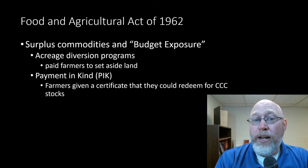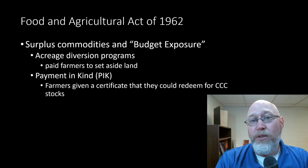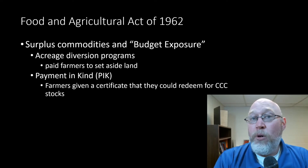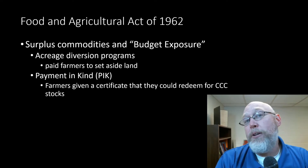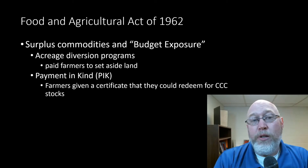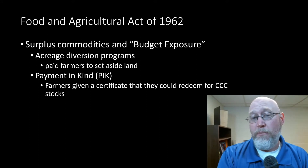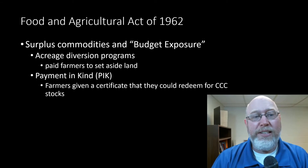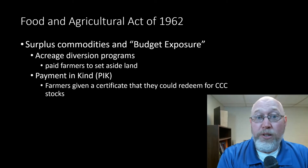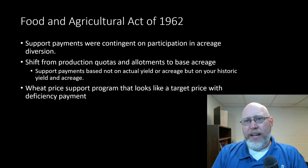The big story in the 60s is surplus commodities — all the extra stuff stockpiled through the CCC program — and budget exposure. What we see in the Food and Agricultural Act of 1962 is more acreage diversion programs: farmers are going to be paid to set aside land. Also appearing for the first time is the concept of payment in kind, or PIK. Instead of paying a farmer with money, you pay them in the equivalent amount of grain. A farmer would get a certificate they could redeem for surplus stockpiles on hand — essentially paying the corn farmer in corn.